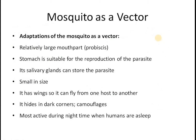The vector has stylet-like mouthparts called a proboscis, which help it pierce the skin of a human to suck out blood. Its stomach is very suitable for the reproduction of the parasite, and its salivary glands can store the parasite. The mosquito is small in size and has wings allowing it to fly from place to place, making it an effective vector for carrying the causative agent of malaria.